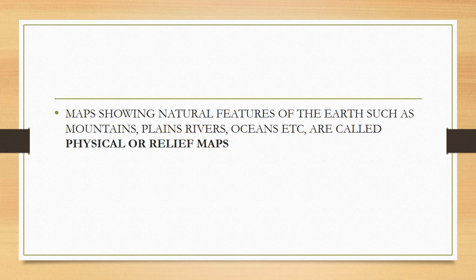The first type of map that we are going to study is physical or relief maps. In these types of maps, those places, plains, mountains, rivers, seas, oceans — everything that is part of a state, a nation, or the whole world itself will be shown. That type of map is called a physical map.